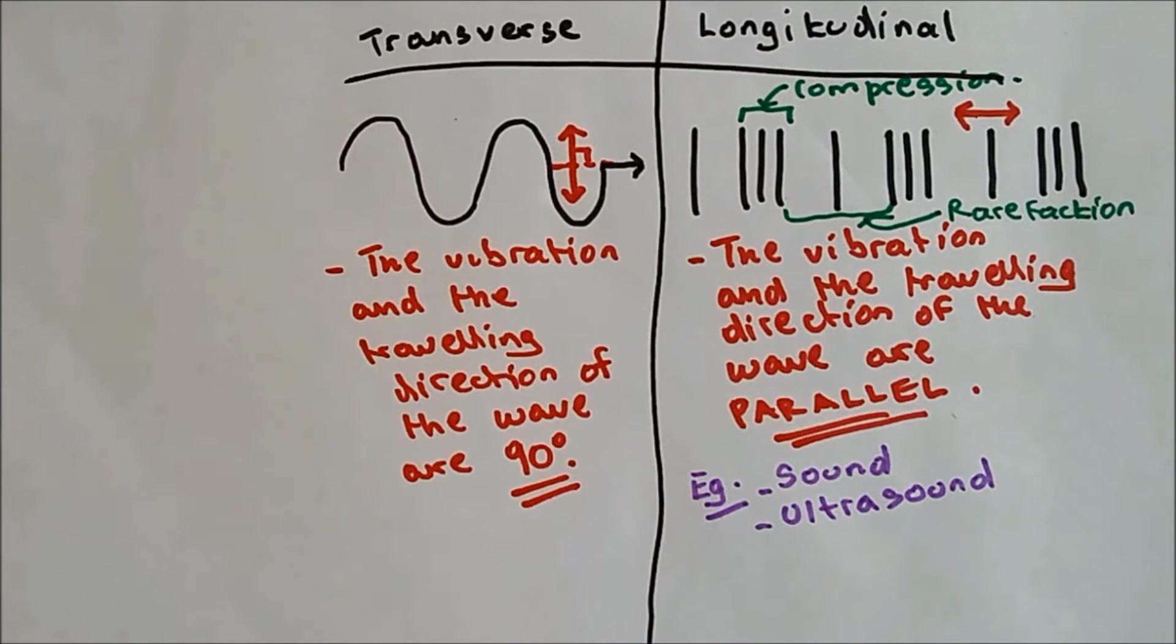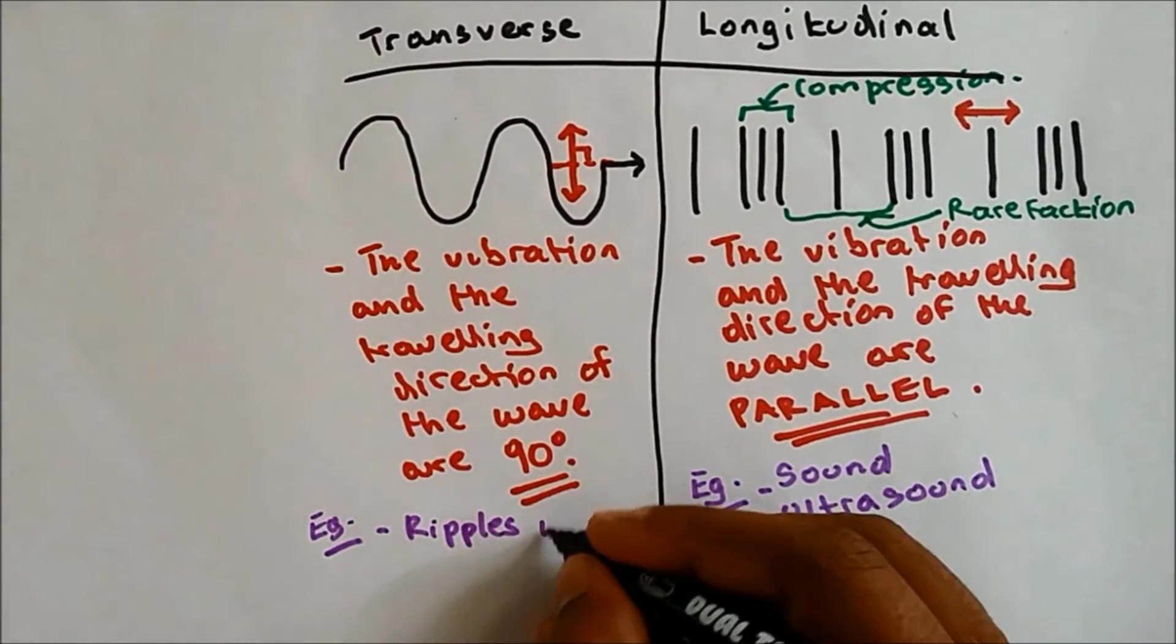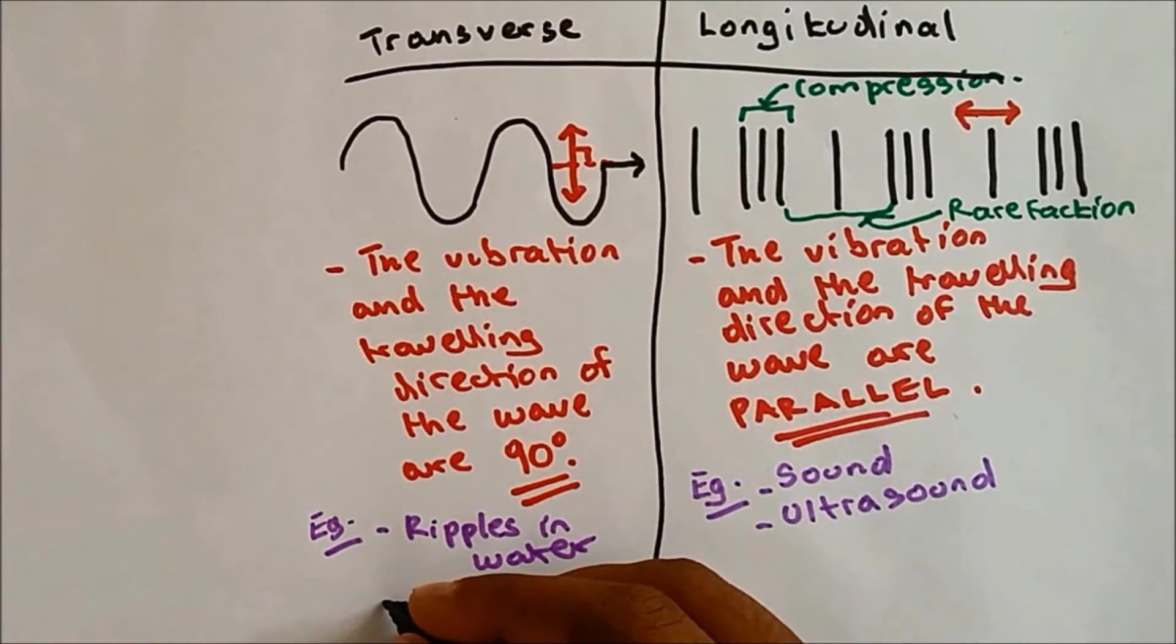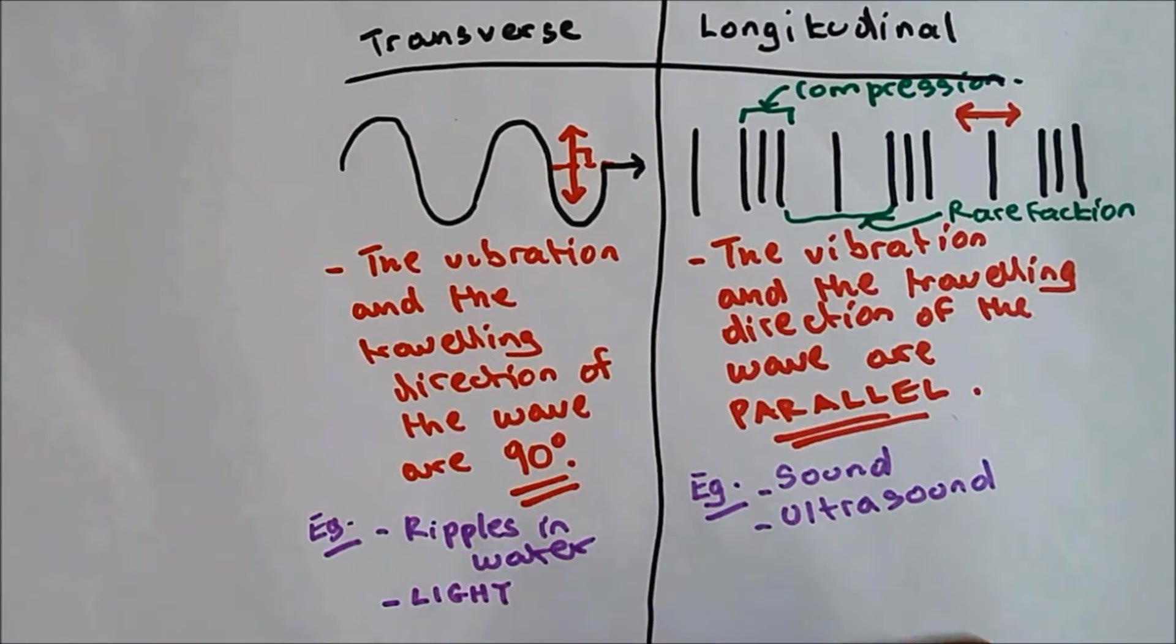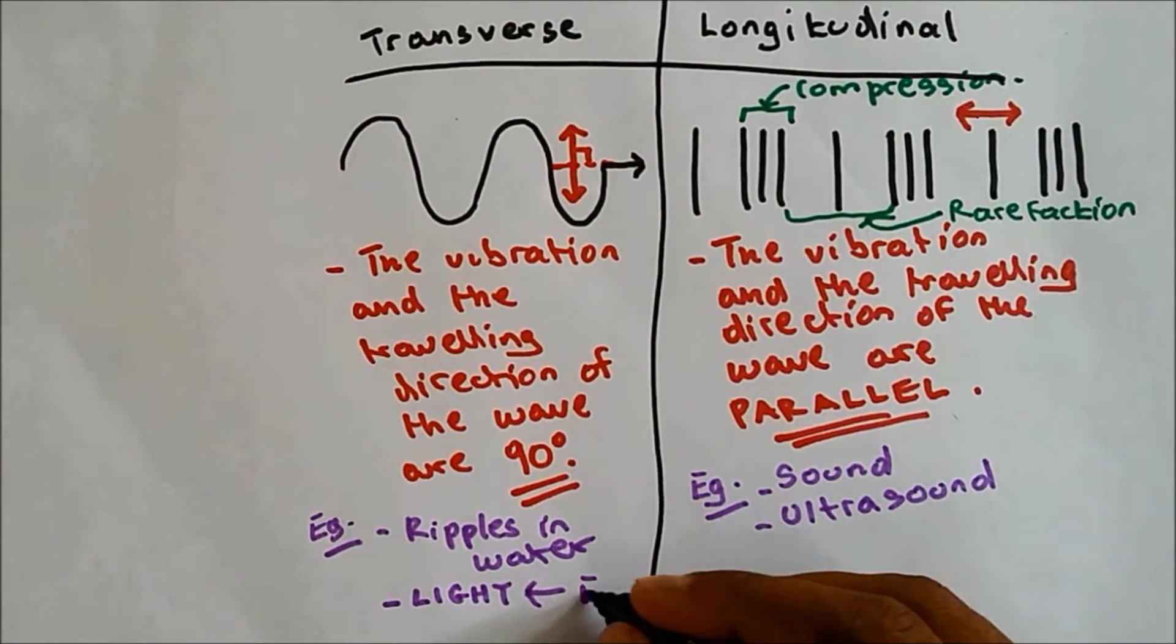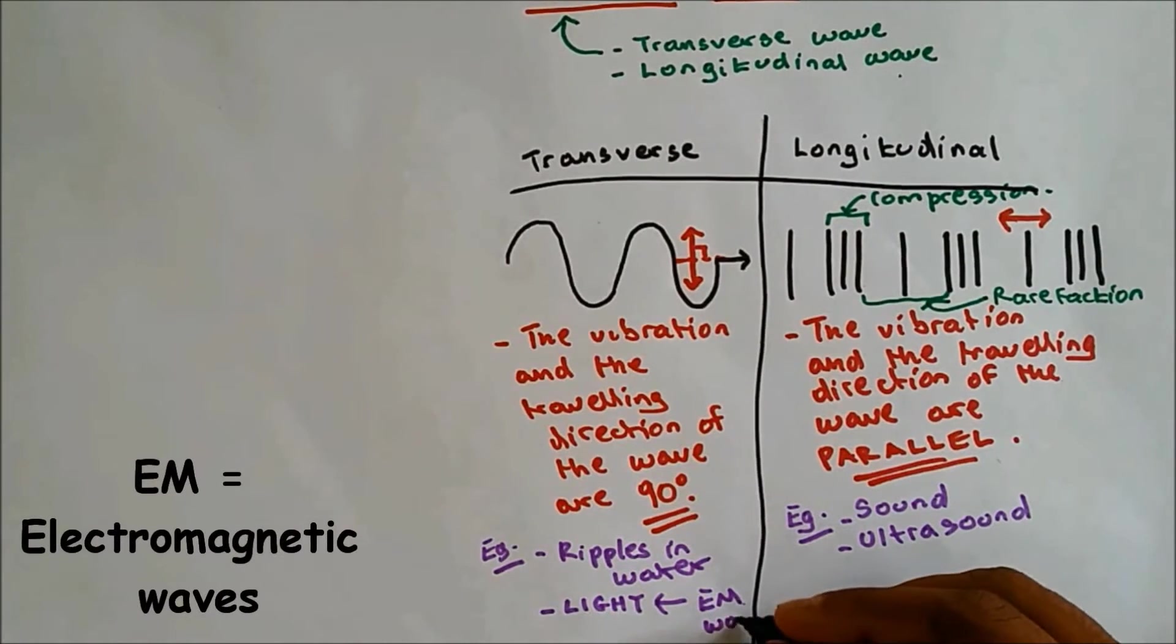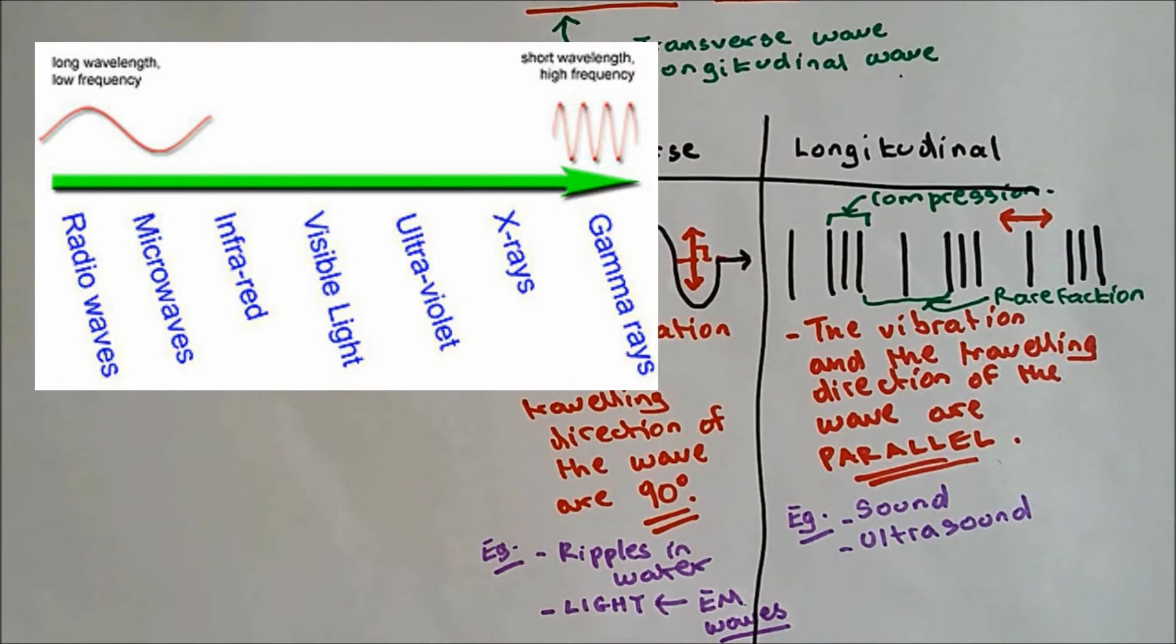And for transverse, a good example would be ripples in water. And another great example would be light. And light is part of electromagnetic waves. So all the seven waves in the electromagnetic spectrums belongs to transverse wave.